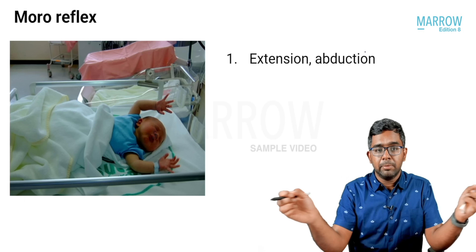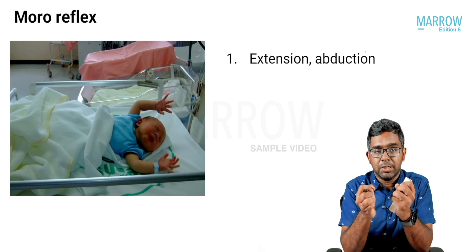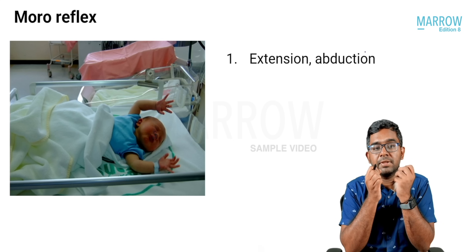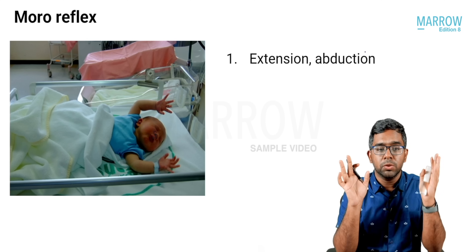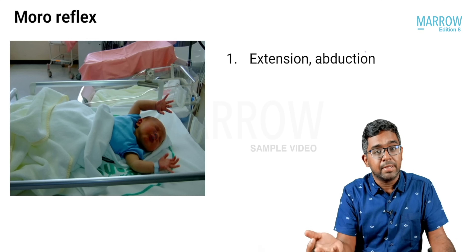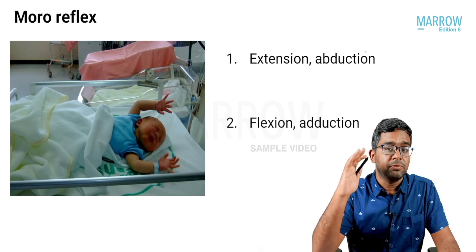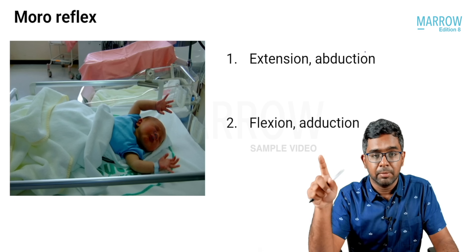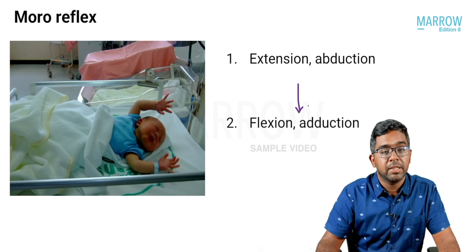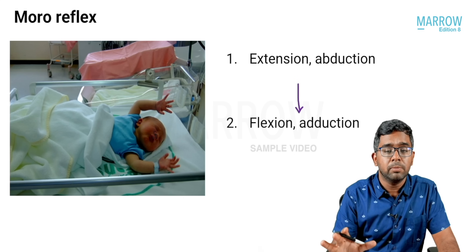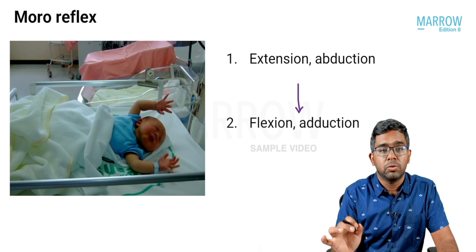The second component: the hands will come to the midline — that is adduction — and the hands will get folded, which is flexion. Exactly the opposite movement. First component is extension and abduction; second is flexion and adduction. Only when both these components are present will you call it a Moro reflex.